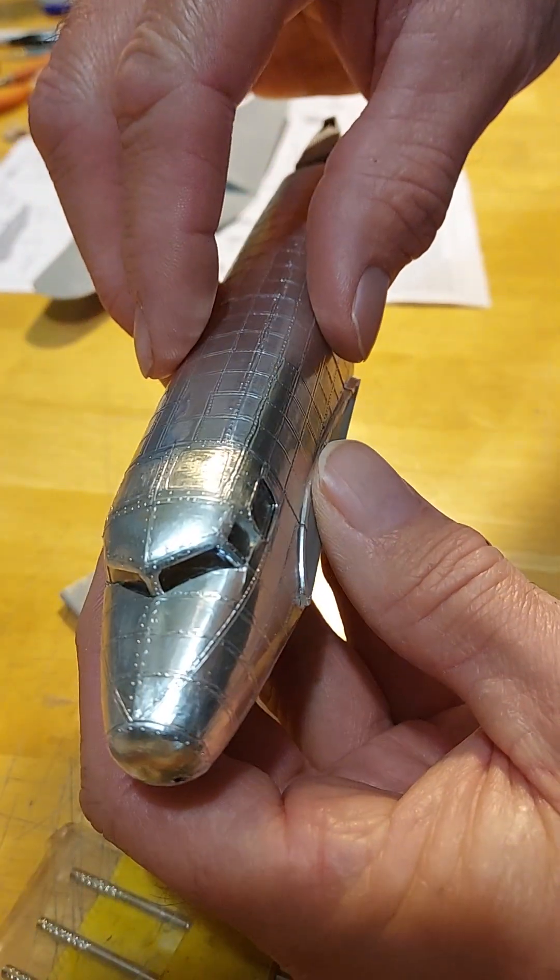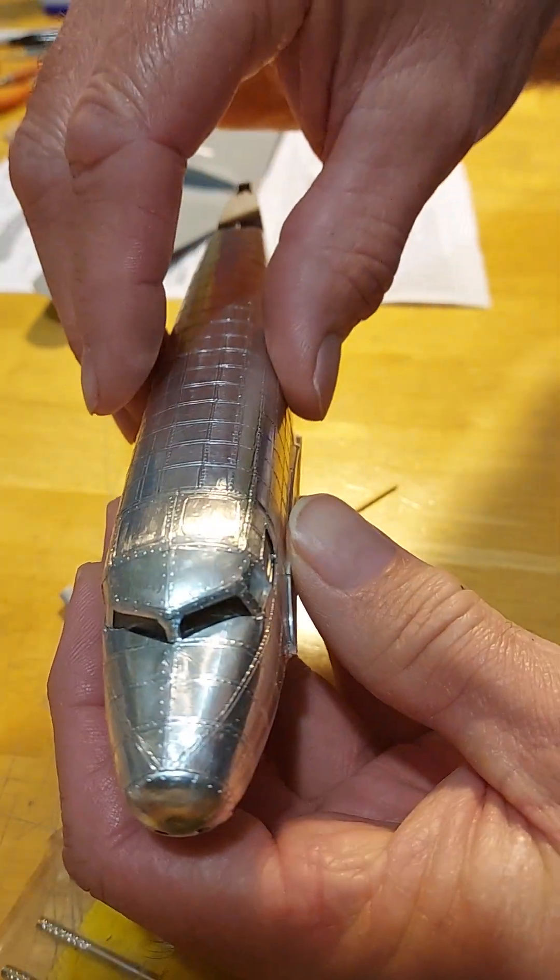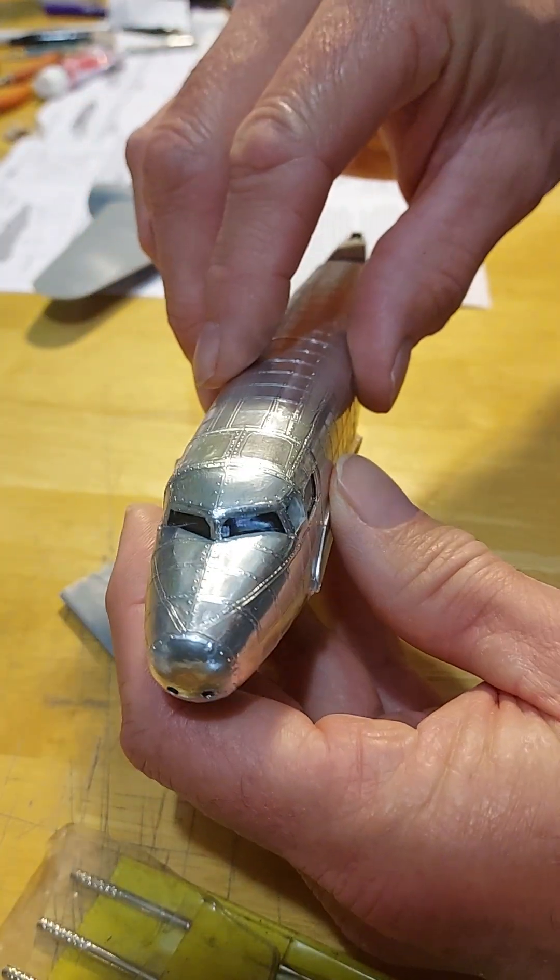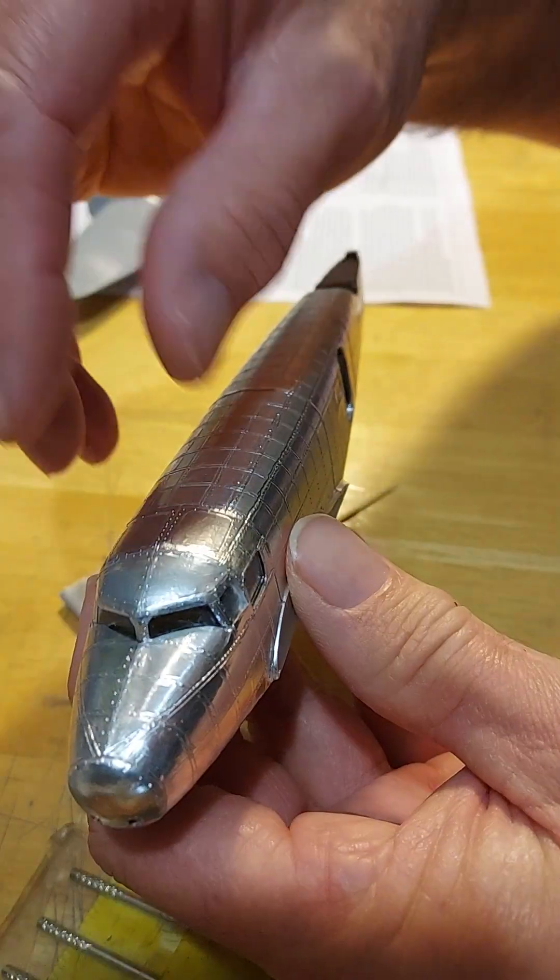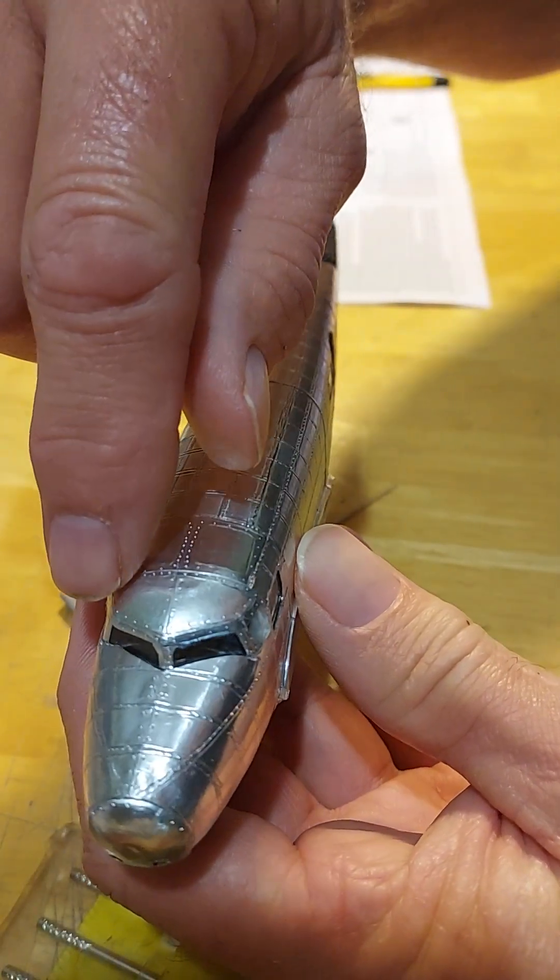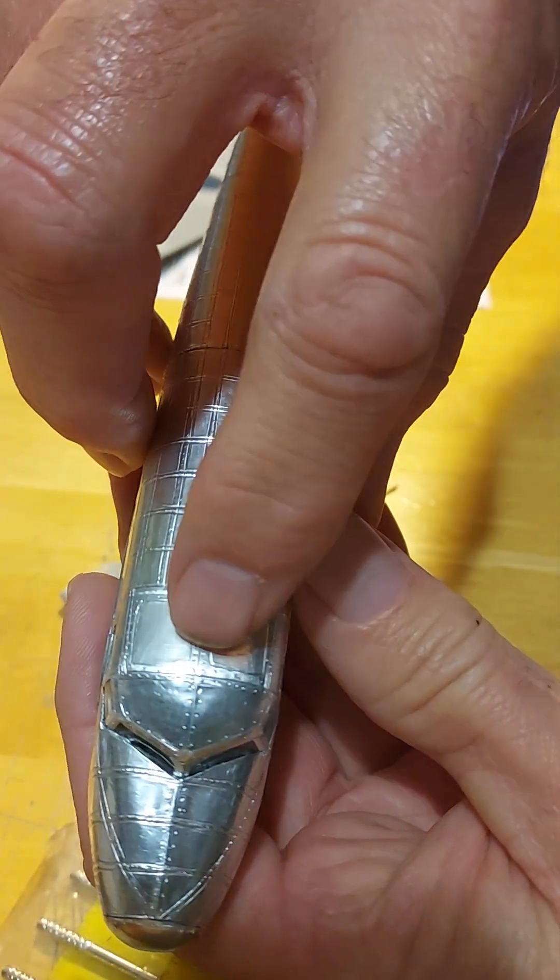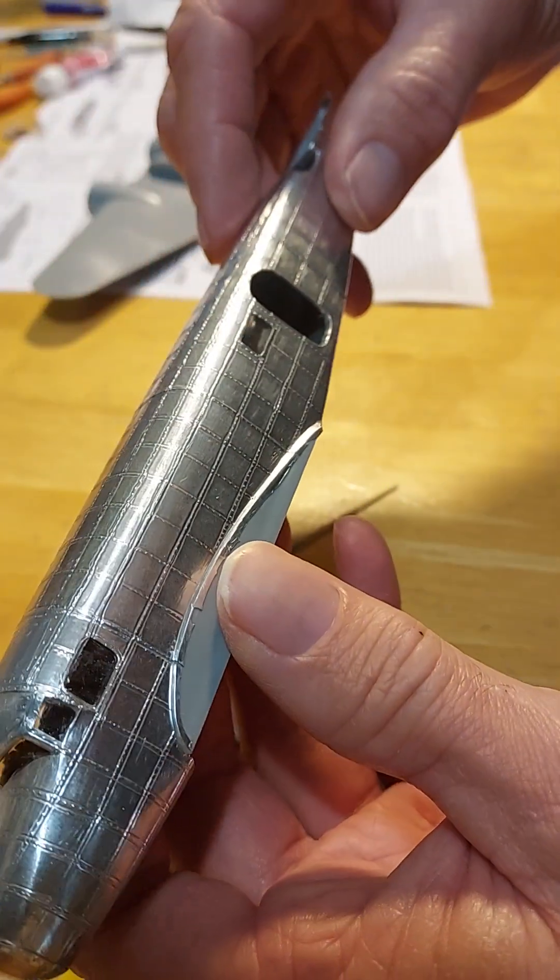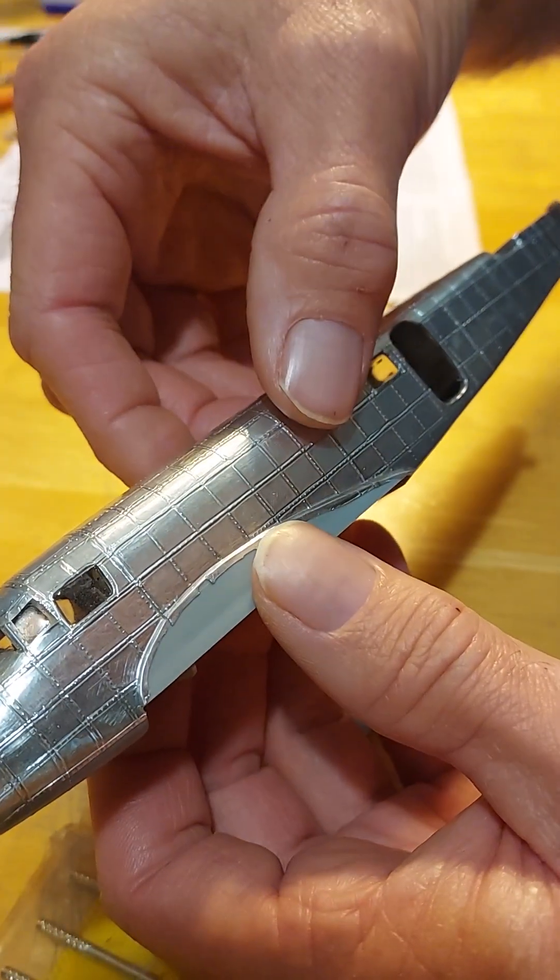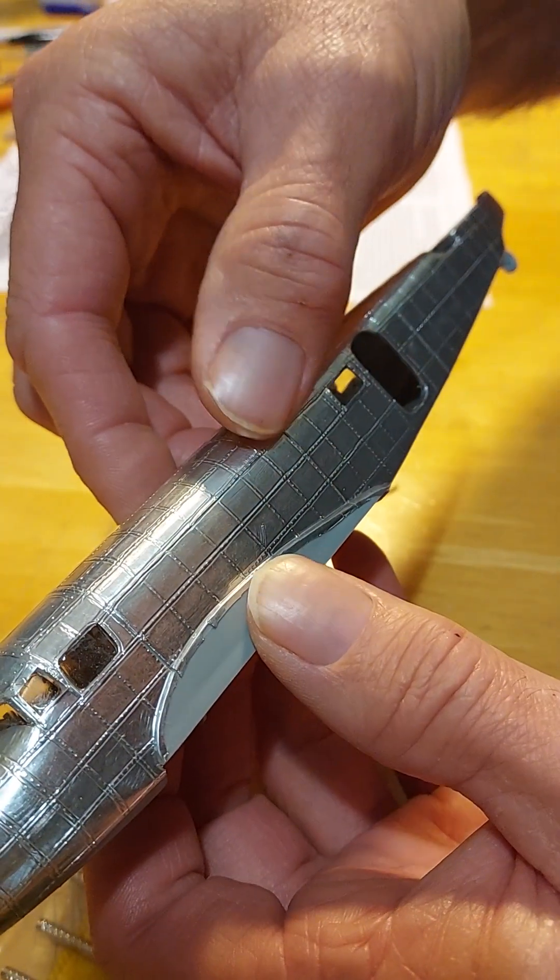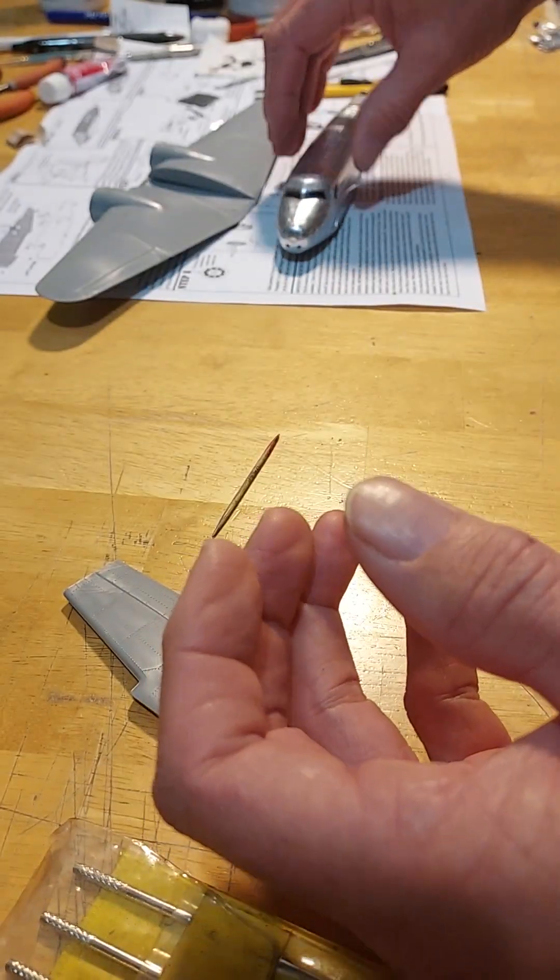If you have areas on the aircraft where there aren't any rivet details—like on this one, this was actually a very poorly cast model—there wasn't any rivet detail through this section and I added my own. But all this was already on the model. I just brought it through the aluminum tape. So that's about all there is to it.